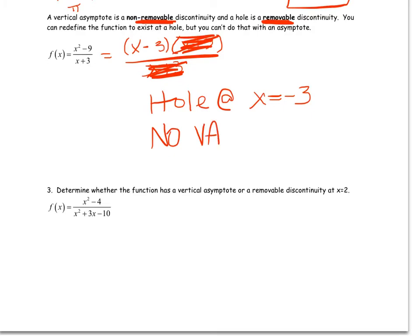So number 3 is interesting because it's just saying something's happening at 2. x equals 2. Is it a vertical asymptote, or is it a removable discontinuity? Which, again, is the same as a hole. Well, again, one way to do this is just to factor. See if it cancels or not. x minus 2, x plus 2. And the denominator, x plus 5, x minus 2.